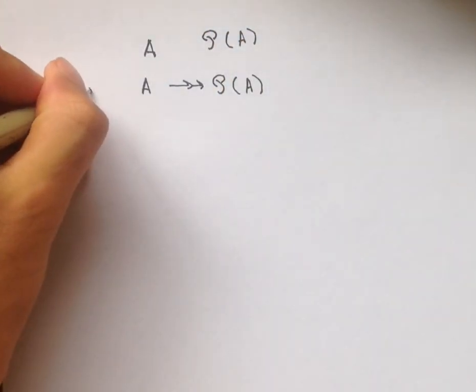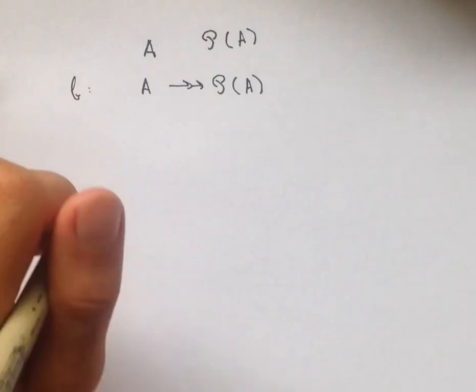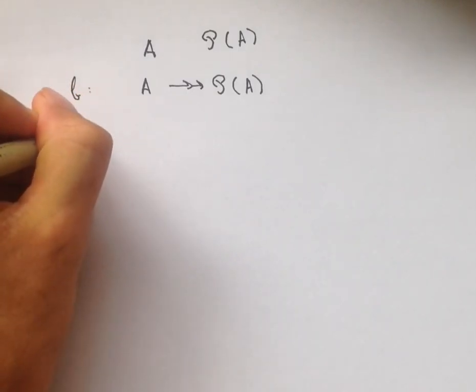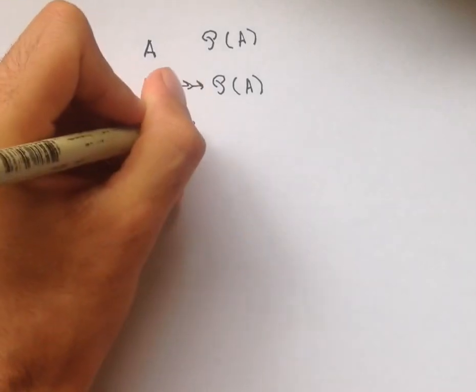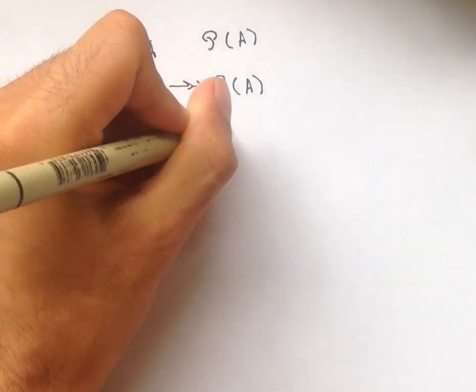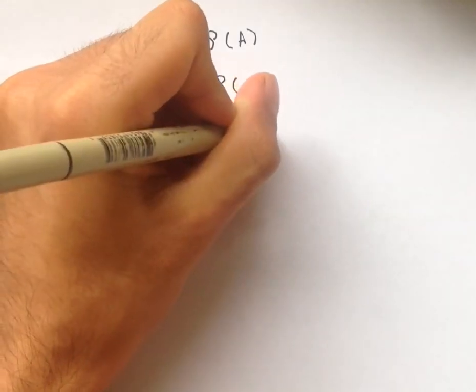To do this contradiction, we're going to first assume that the function F exists, and we're going to use this function F to create a set B, a subset of A defined by B is equal to the set of all x in A such that x is not in F of x.